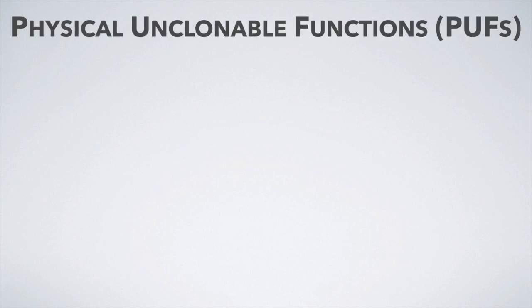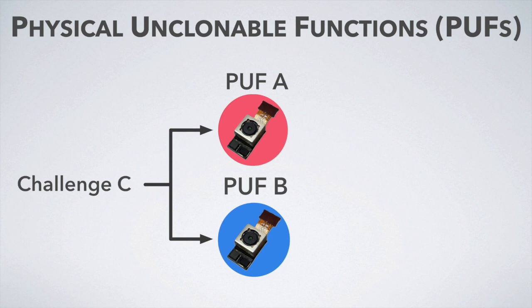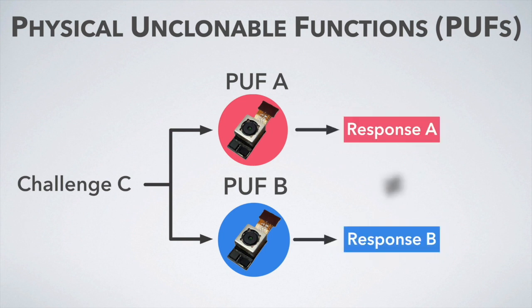PUFs implement challenge-and-response authentication to evaluate the uniqueness of their physical microstructure. For example, when the authenticator presents a question — challenge C — to two identical circuits, PUF A and PUF B, they output different responses, and the authenticator should authenticate only one unique valid response.